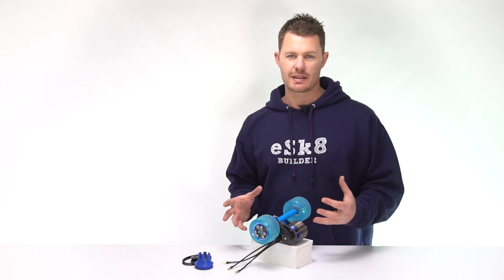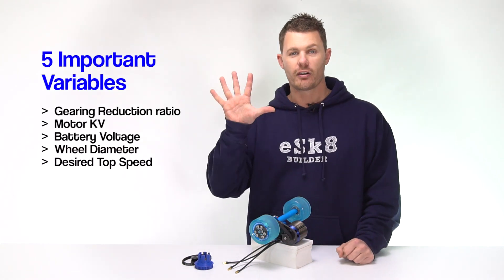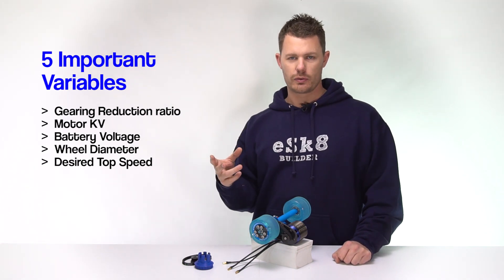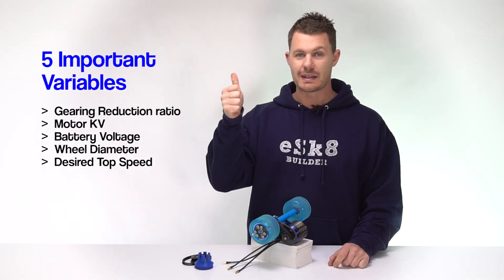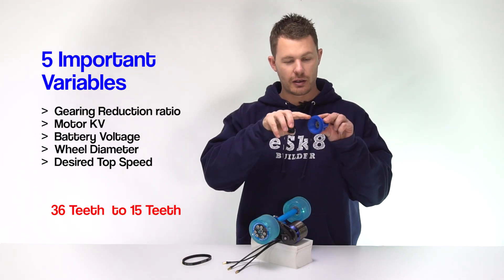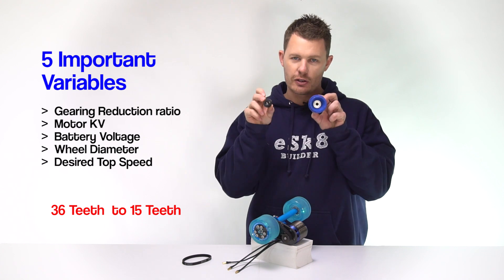So out of those six things there are five variables that you need to decide on to get the result that you want. Number one is the gearing reduction ratio. That is the difference of teeth on this big one to the teeth on the small one.